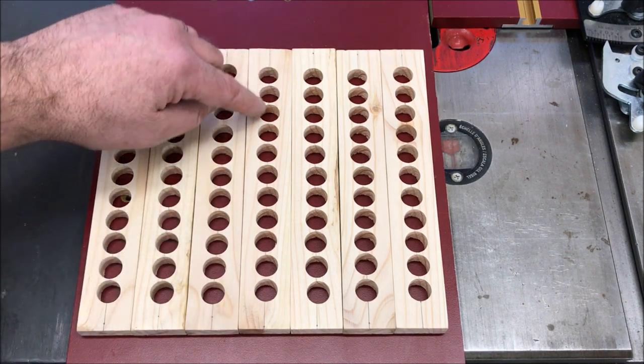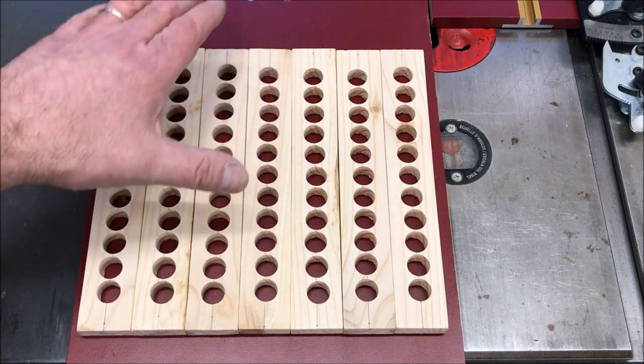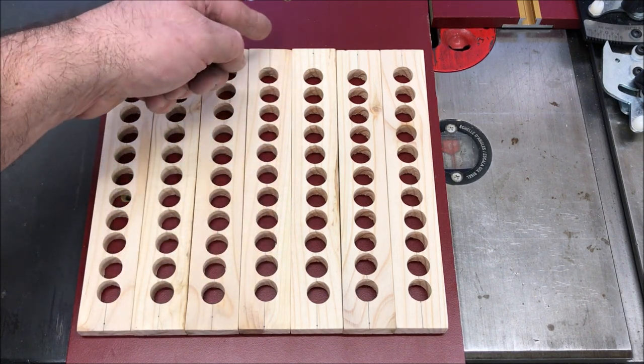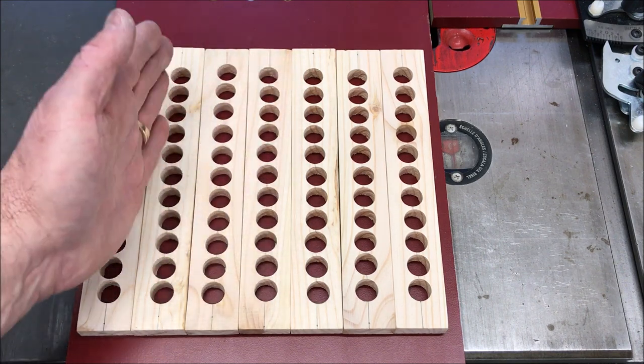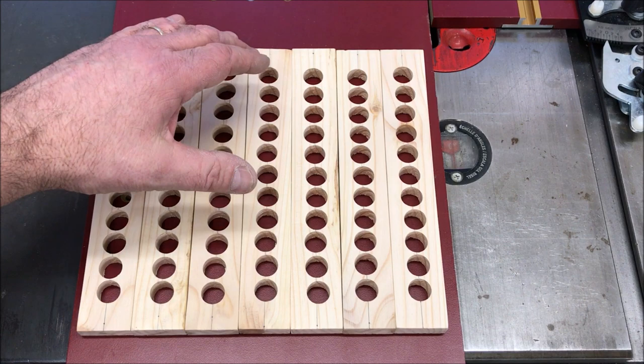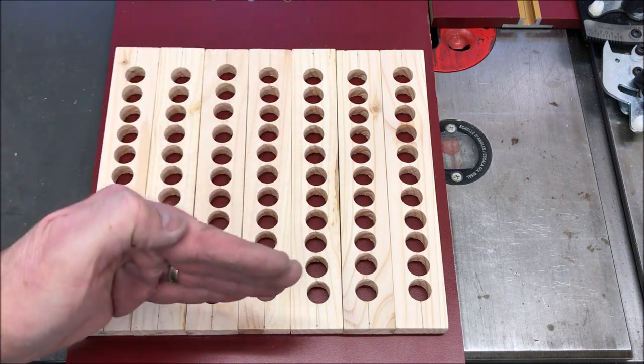You'll notice that the line that I drew down the center of each one of these pieces is still there. We're going to take these to the bandsaw and split them in half, and each one we split in half will form the left and the right half of a rack to hold those individual tubes.